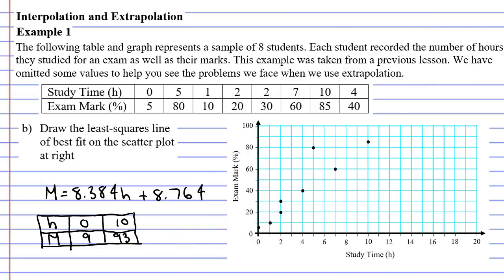All right so we've got our two points. We'll start with the 0, 9. If we were to plot that it would go just under the 10 there. And next the 10, 93.